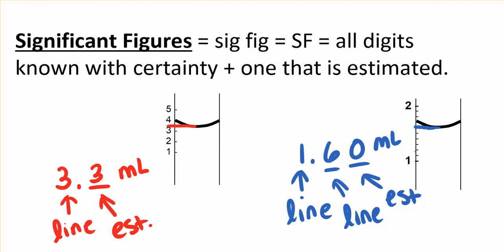So always look at what your smallest line represents, and then you'll go one place beyond that.